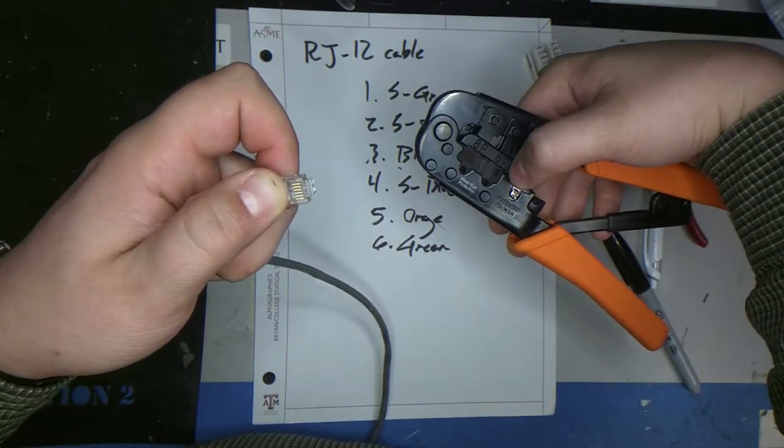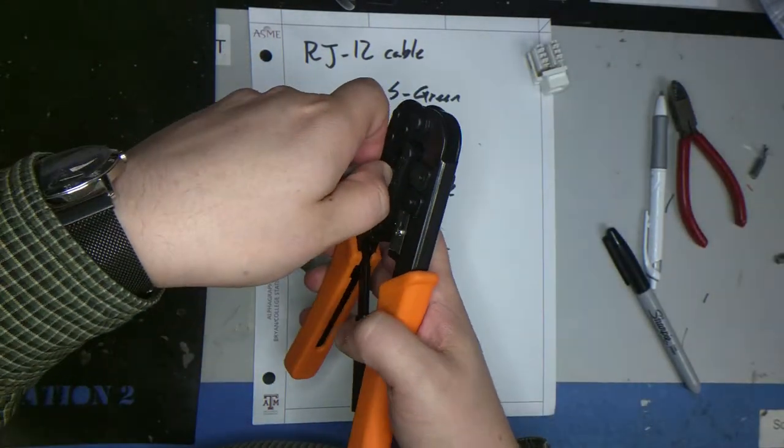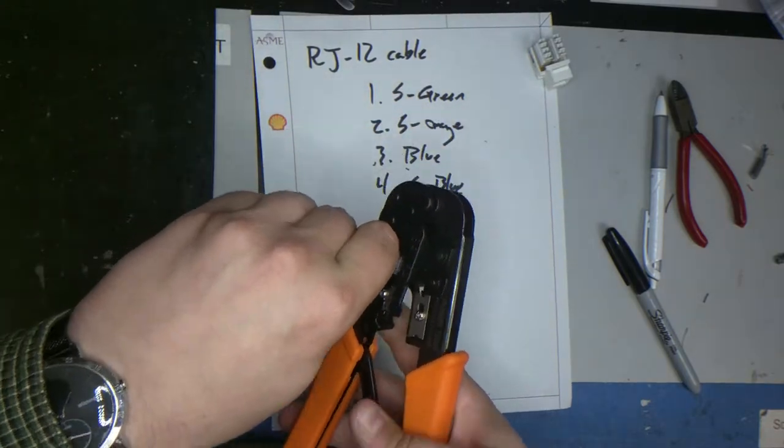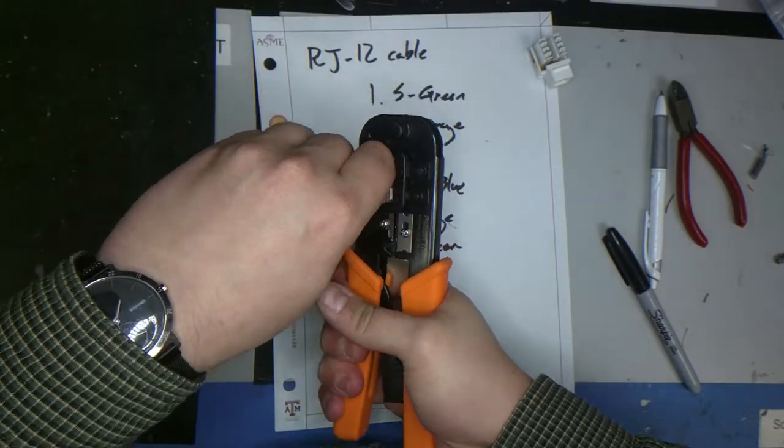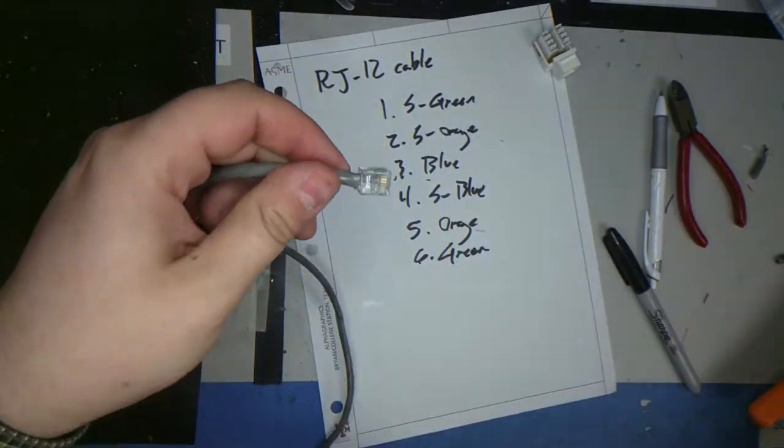One of them is eight pin. One of them is six pin. So we're using six pin. So just put it into the hole. Kind of leave some pressure on it. And then crimp it off really good. Use a little bit of pressure. And then pull it out.